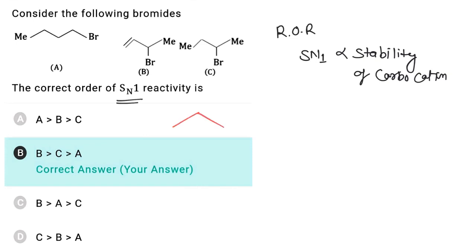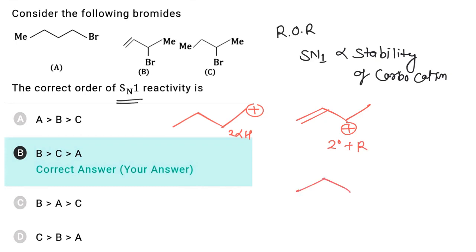In the first case, a primary carbocation is formed which has only 2 alpha hydrogens. In the second case, the carbocation formed is allylic 2-degree and stabilized by resonance. In the third case, the carbocation formed is 2-degree and has 5 alpha hydrogens. So the most stable carbocation is B.